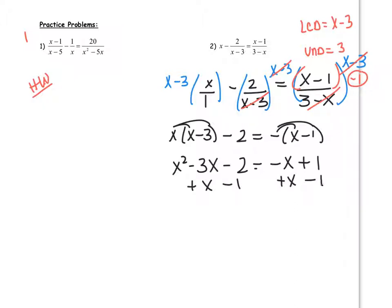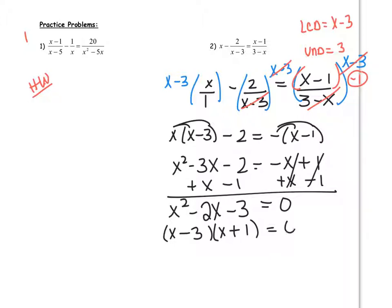And now we have to solve. So we have x squared plus, oops, excuse me. x squared minus 3x minus x, or plus x, is negative 2x minus 3. And we factor.